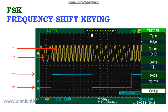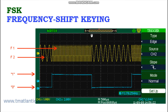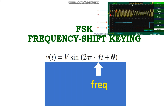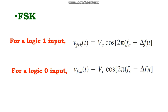Now let's look at frequency shift keying. If the information signal is digital and the frequency of the carrier is varied proportional to the information signal, the process is referred to as frequency shift keying (FSK). FSK is another relatively simple, low-performance type of digital modulation. It is a form of constant-amplitude, constant-angle modulation similar to standard FM, except the modulating signal is a binary signal varying between two discrete voltage levels. FSK is sometimes called binary FSK (BFSK).